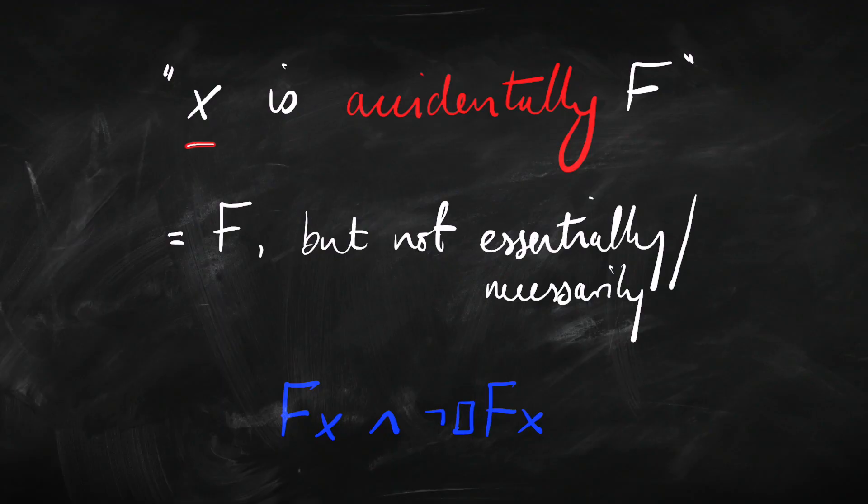The distinction between a thing being essentially F or accidentally F doesn't directly map onto the box and diamond, because the diamond isn't a contrast to the box. If something is necessarily F — essentially F — then it is also possibly F. Being essentially a human being doesn't rule out being possibly a human being. So what we mean when we say something is accidentally a certain way is that it's that way but it's not essentially that way. We express 'x is accidentally F' as: it's F, but it's not necessarily or essentially F.